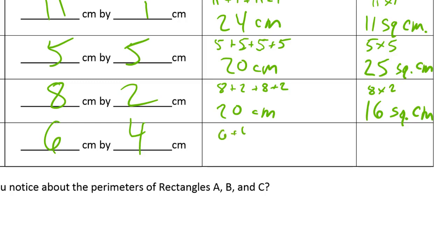6 plus 4 plus 6 plus 4. That's another 2 tens. So 20 centimeters. And then this is 6 times 4, which is 24 square centimeters.